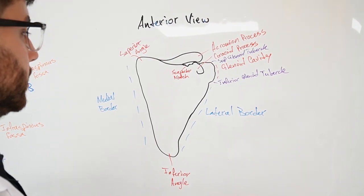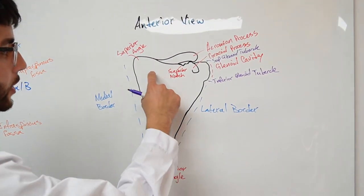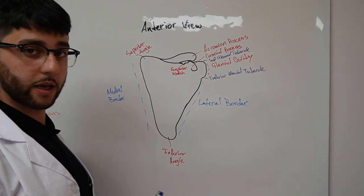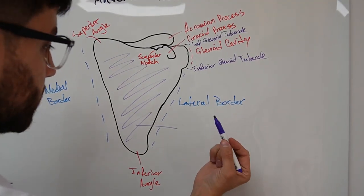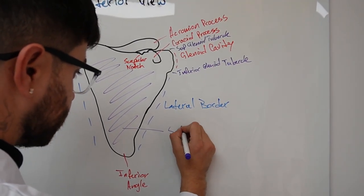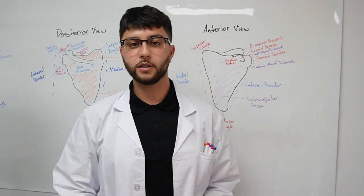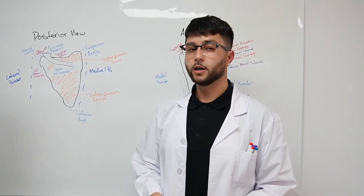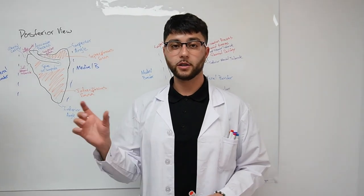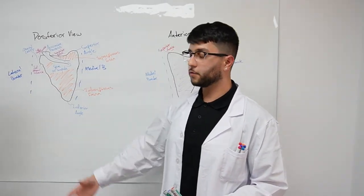You've got the superior and inferior glenoid tubercle. And then the inner portion of the scapula is called the subscapular fossa. Getting a couple of colors and breaking down the scapula in different planes of view, you can actually learn a lot.